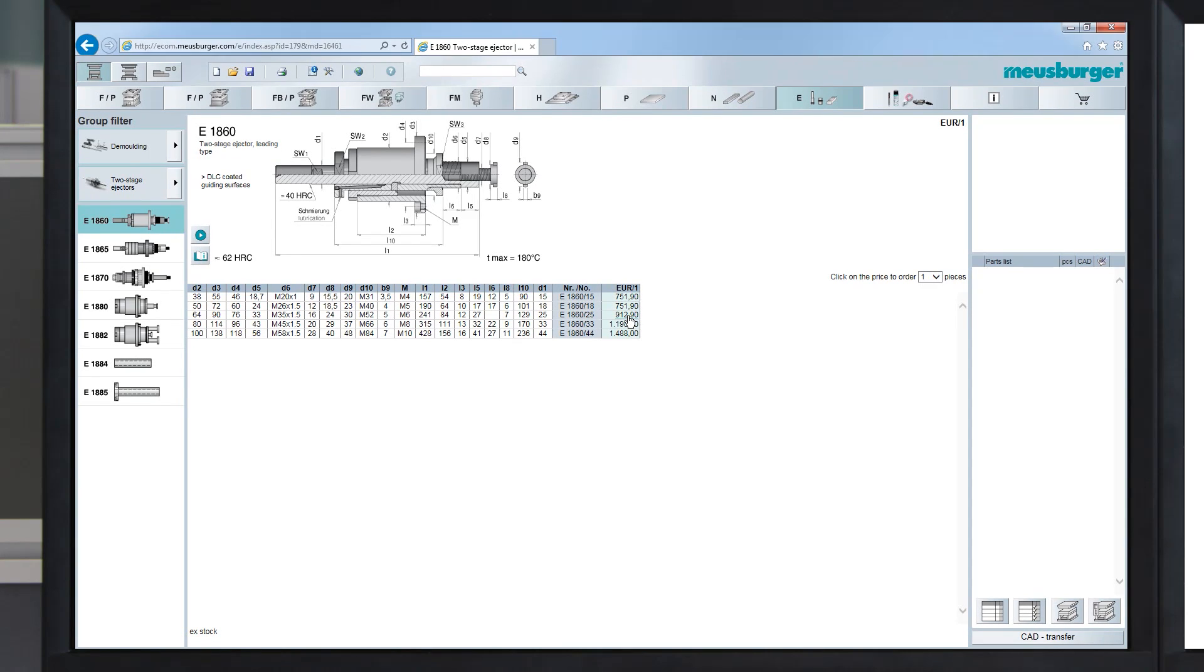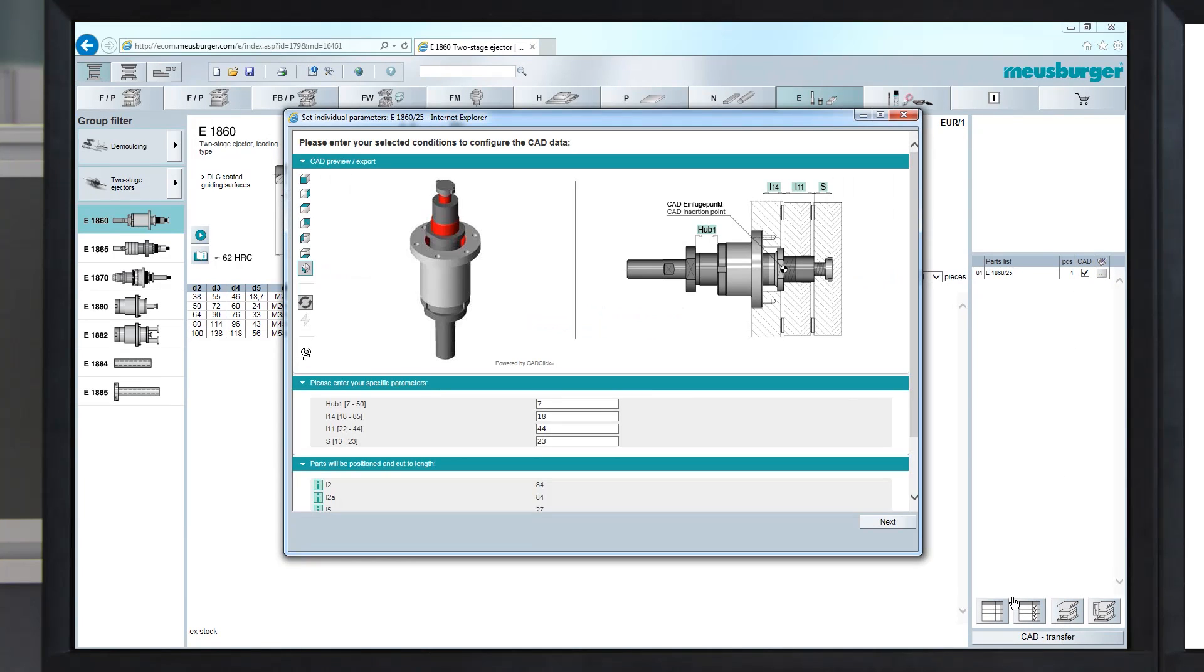Then follows the simple generation of the 3D data in the online shop or CD catalogue. In the live view, the 3D model is further adjusted by the entry of the required parameters and then exported ready to use.